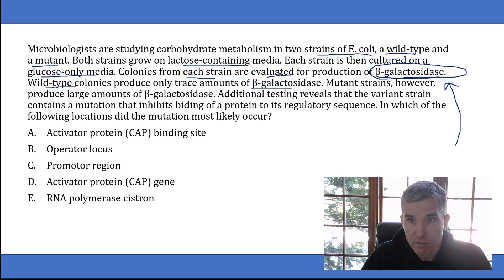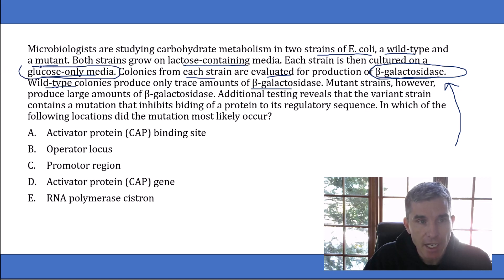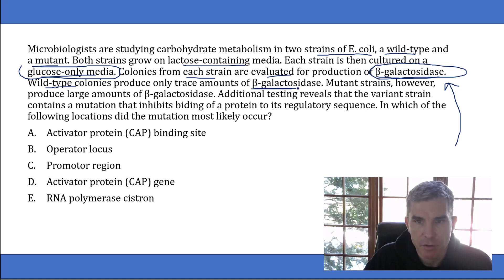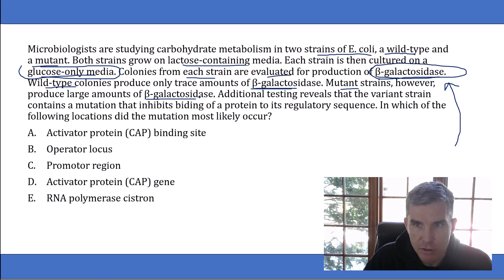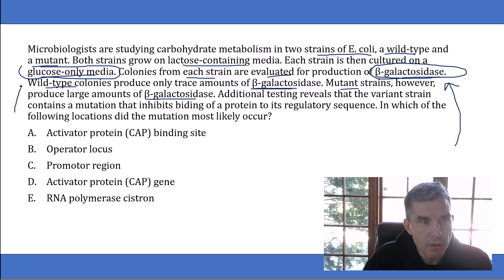This makes sense, right? They're growing the colonies on glucose-only media, so the lac operon should be shut off. The cells should not be producing any of the enzymes like beta-galactosidase necessary for metabolizing lactose. The mutant strains, however, produce large amounts of beta-galactosidase — they shouldn't be doing that. The mutant strains are still using the lactose metabolizing genes even though they're in glucose-only media.